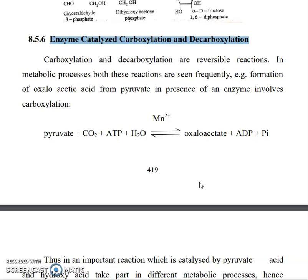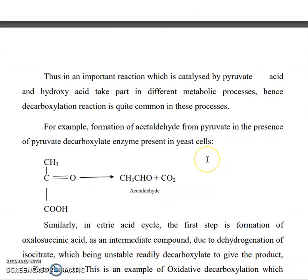For example, formation of auxilioacetic acid from pyruvate in the presence of an enzyme involves carboxylation. Look at here: pyruvate, carbon dioxide, ATP (adenosine triphosphate), water yield auxilioacetate and ADP, an inorganic phosphate, in the presence of Mg2+. Thus this is an important reaction catalyzed by pyruvate carboxylase, and hydroxyacetate takes part in different metabolic processes.